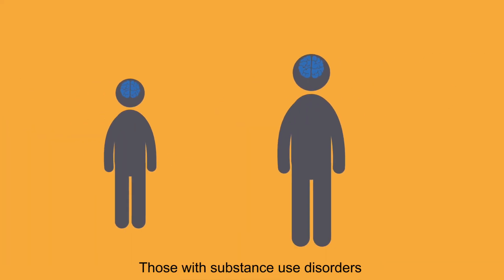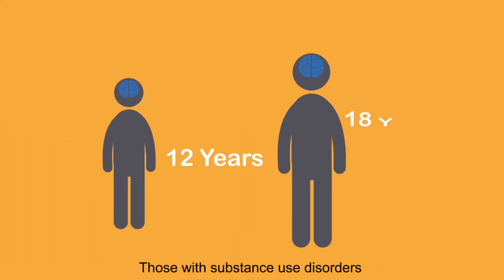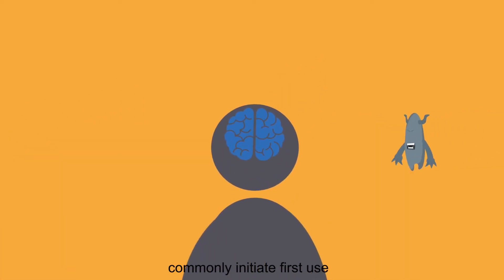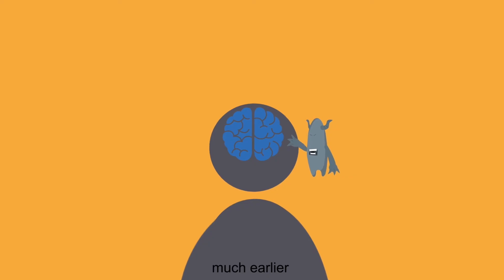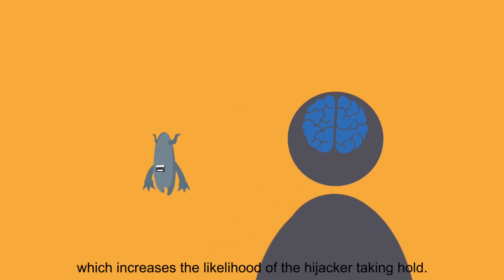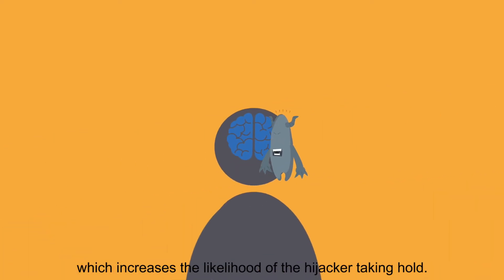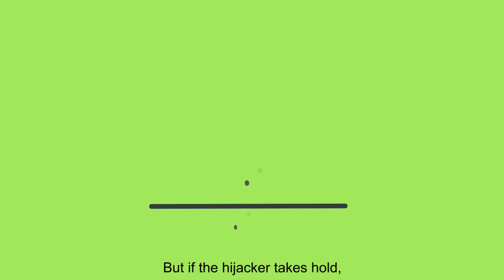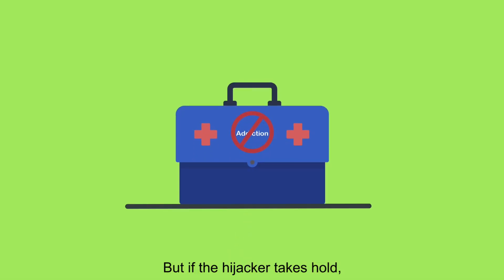Those with substance use disorders commonly initiate first use much earlier, between 12 and 18 years old, which increases the likelihood of the hijacker taking hold.